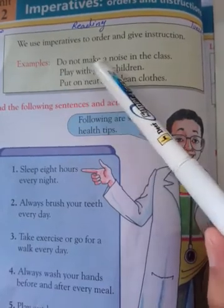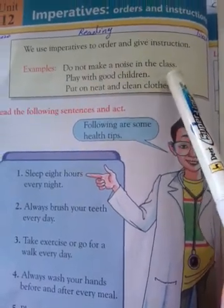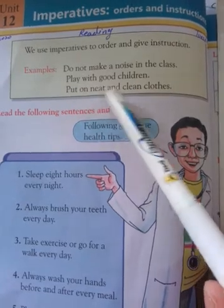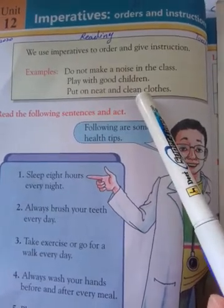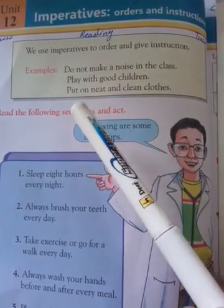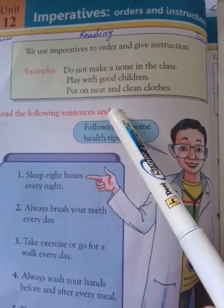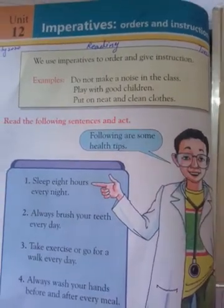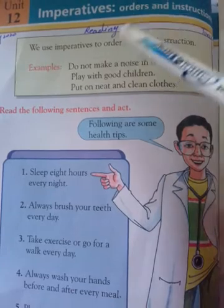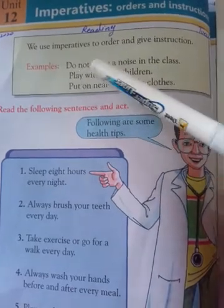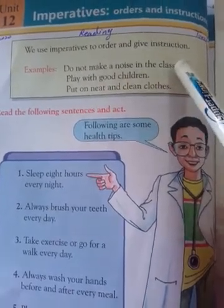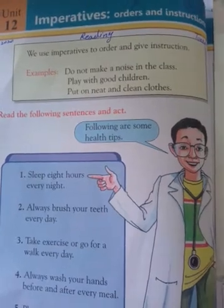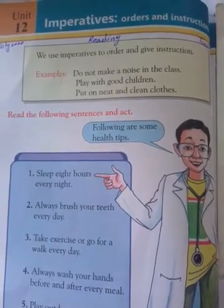Examples: Do not make a noise in the class — class میں شور نہ کریں. Play with good children — اچھے بچوں کے ساتھ کھیلیں. Put on neat and clean clothes — صاف ستھرے کپڑے پہنیں. یہاں پہ do not make a noise in the class میں order دیا گیا ہے اور next میں instructions دی گئی ہیں.